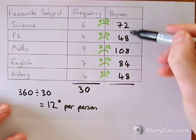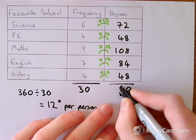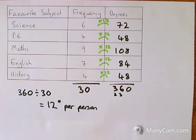So if I add these up, I get 72, 120, 228, 312, and then 360. So they've added together to make 360, so I know that I'm along the right lines.